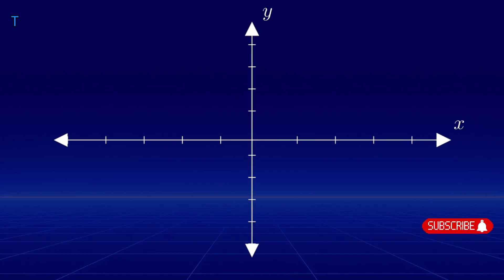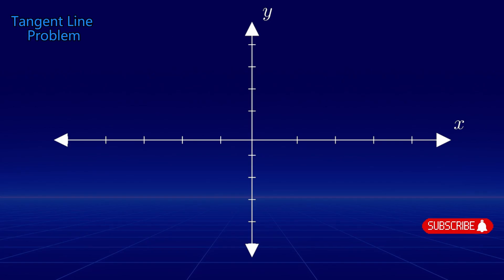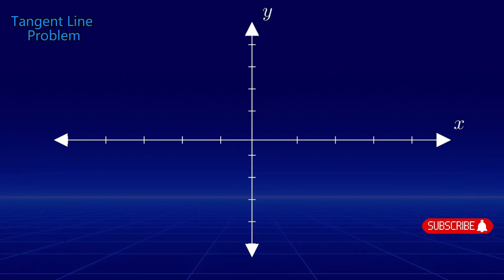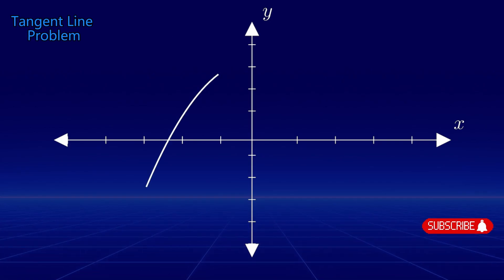One of the first real applications of limits is solving the tangent line problem. A tangent line is a line that touches a curve at exactly one point and is parallel to the curve at that point.